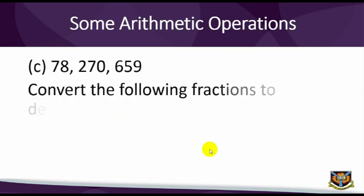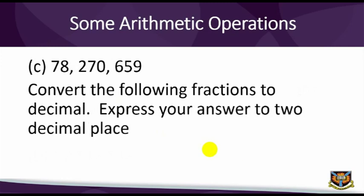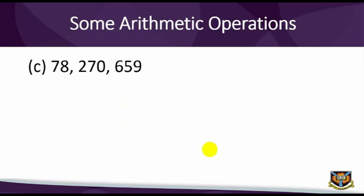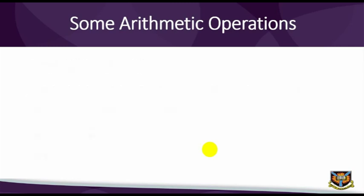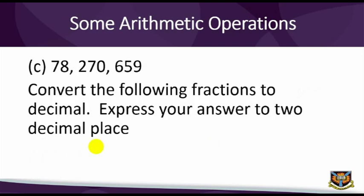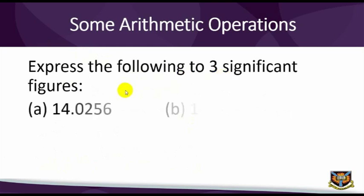5. Appropriate the following figures to the nearest whole number: A. 17.239 B. 12.549 C. 78,270,659. 6. Convert the following fractions to decimal, express your answer to two decimal places: A. 1 over 8 B. 3 over 9 C. 1 over 4. 7. Express the following to three significant figures: A. 14.0256 B. 10.5497.